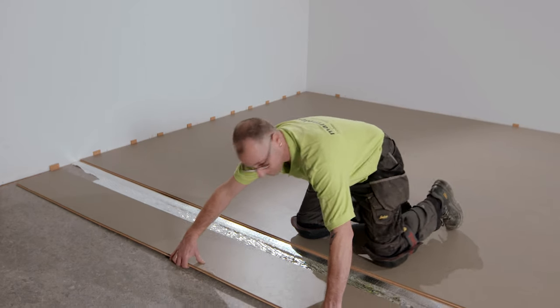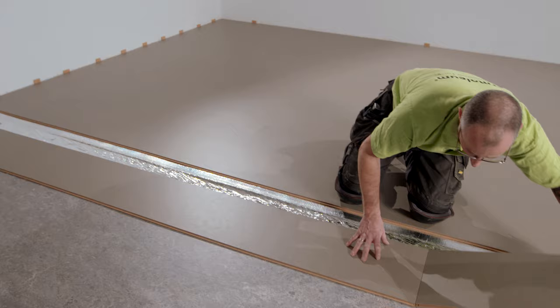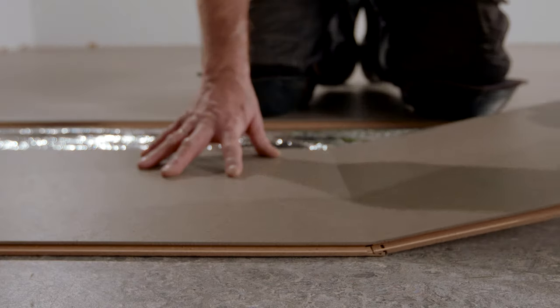If for some reason you have to disassemble the floor, just gently pull the row over the long side and take the boards apart by lifting it, starting from the last board.